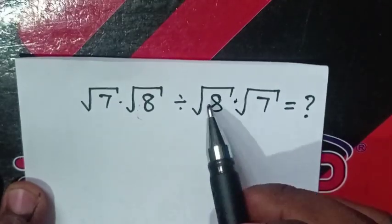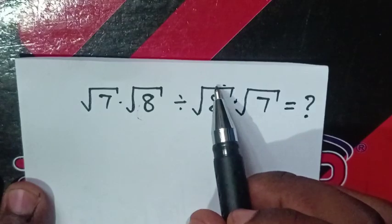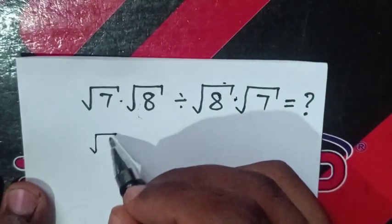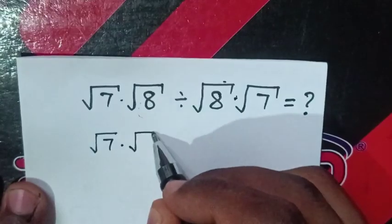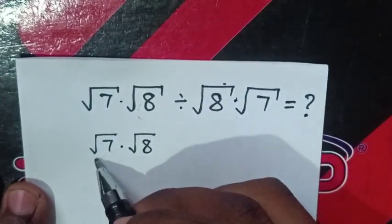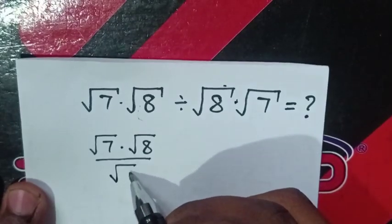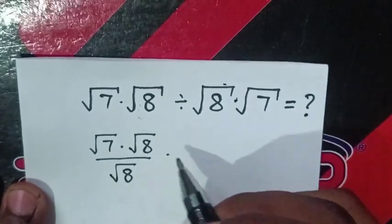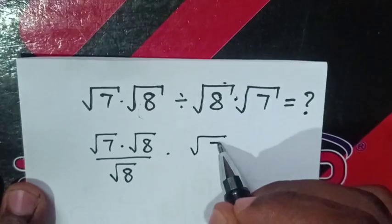Now, in division, this square root of 8 will be in the denominator. So it will be square root of 7 times square root of 8, over square root of 8, times this square root of 7.